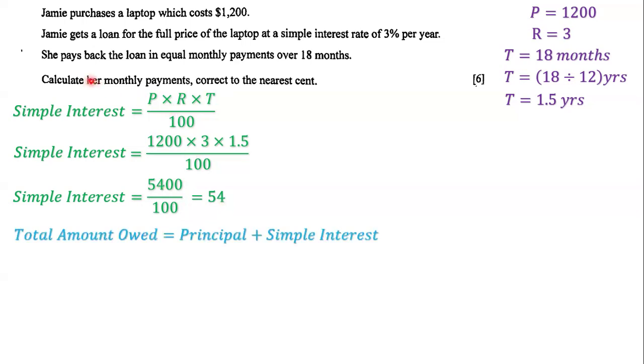Now we need to figure out her monthly payments. First, we determine the total amount owed. The total amount owed is the principal, which is 1,200, plus the simple interest, which we just calculated as 54.